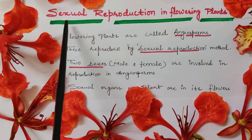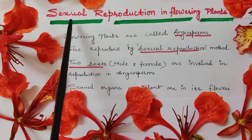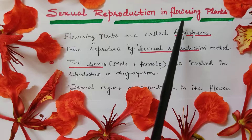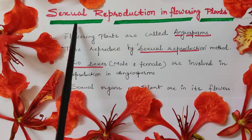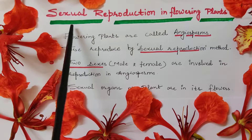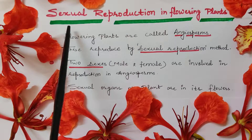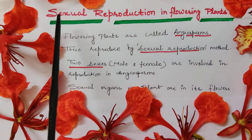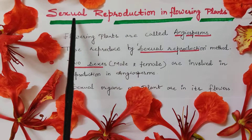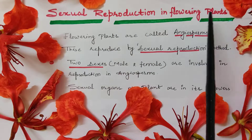In this video, we will discuss about the very interesting topic of chapter reproduction, i.e., sexual reproduction in flowering plants. In our previous video, we discussed about vegetative propagation in plants, i.e., mode of asexual reproduction in plants in which only vegetative parts of the plant — stem, root, leaf — play a role to produce a new plant.